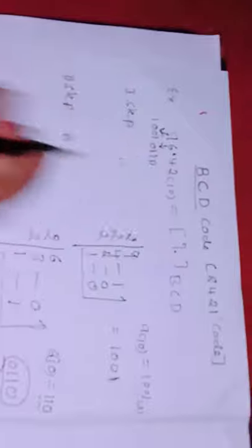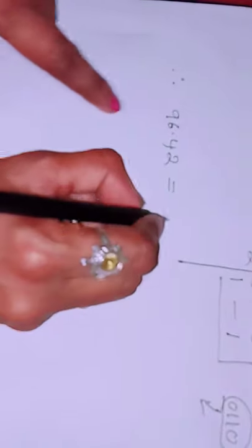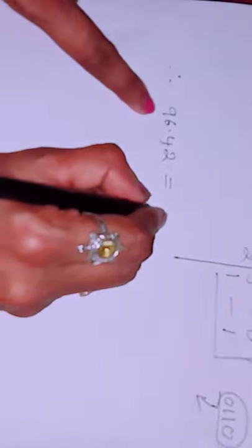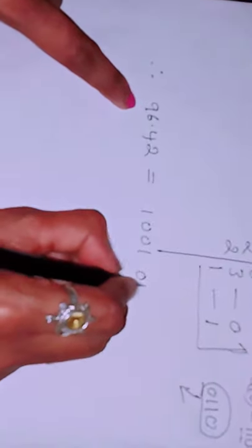Exactly in the same method, 4 also can be converted into BCD. So therefore, 96.42 equals... So 9 is 1, 0, 0, 1. Then 0, 1, 1, 0.